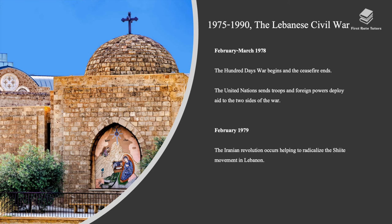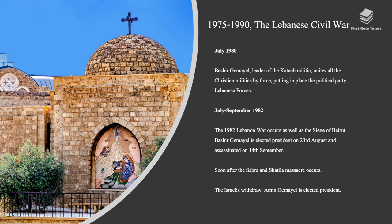In February 1979, the Iranian Revolution occurred, helping to radicalize the Shiite movement in Lebanon. In July 1979, Bashir Jumayel, leader of the Kataeb militia, united all the Christian militias by force, putting in place the political party known as the Lebanese Forces.